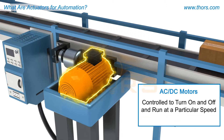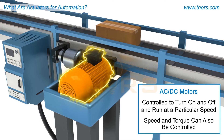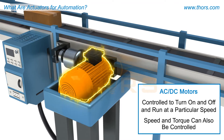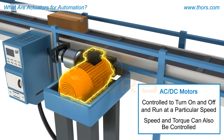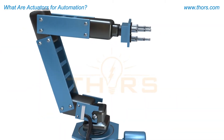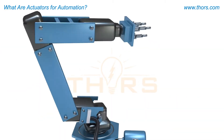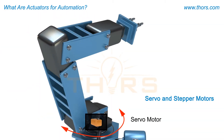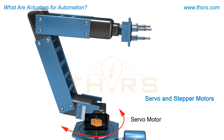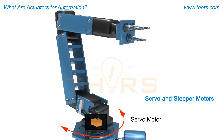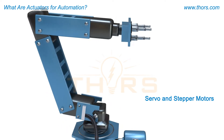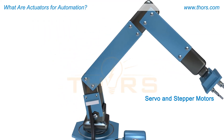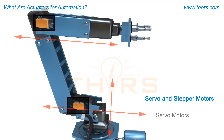In other cases, the speed and torque can be controlled on those same motors using special controls. Other types of motors are called servo and stepper motors. These motors are designed to move very precisely and are commonly used in robots and other applications where machinery needs to move to an exact position.